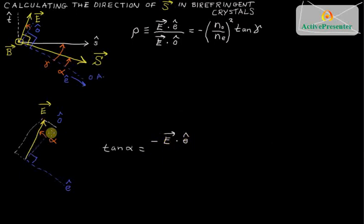Then I want the adjacent length on this triangle, and that's positive e dot o-hat, because the electric field's component along o-hat is already positive. So that's the tangent of alpha,